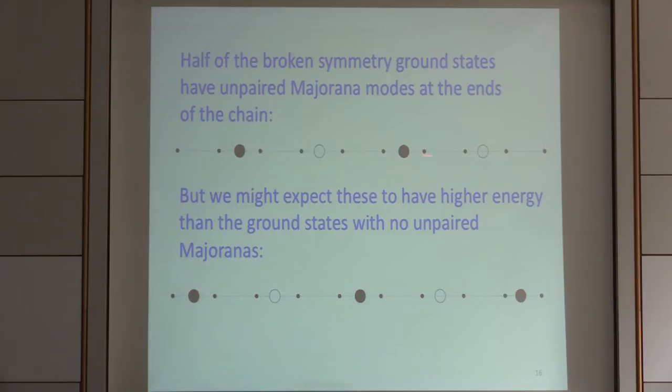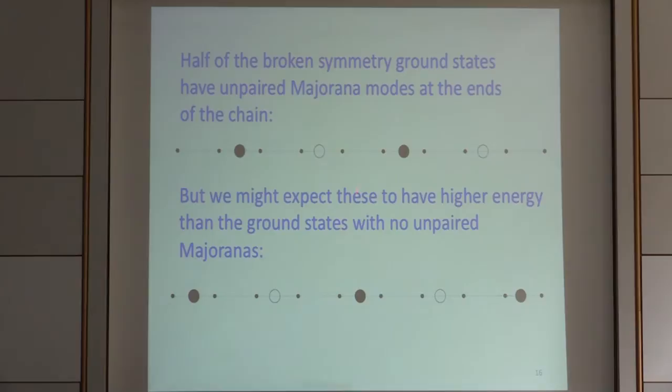You might wonder what happens at the edges. One interesting aspect of Majoranas is they can sometimes appear as edge states at the ends of chains. If we're in one of these spontaneously broken phases, we could or could not have unpaired Majoranas at the end, depending on how we combine Majoranas to make Diracs. Energetically, the state where more Majoranas are combined into Diracs likely has lower energy, so if we're in this spontaneously broken gapped phase, we probably don't have Majoranas at the end.